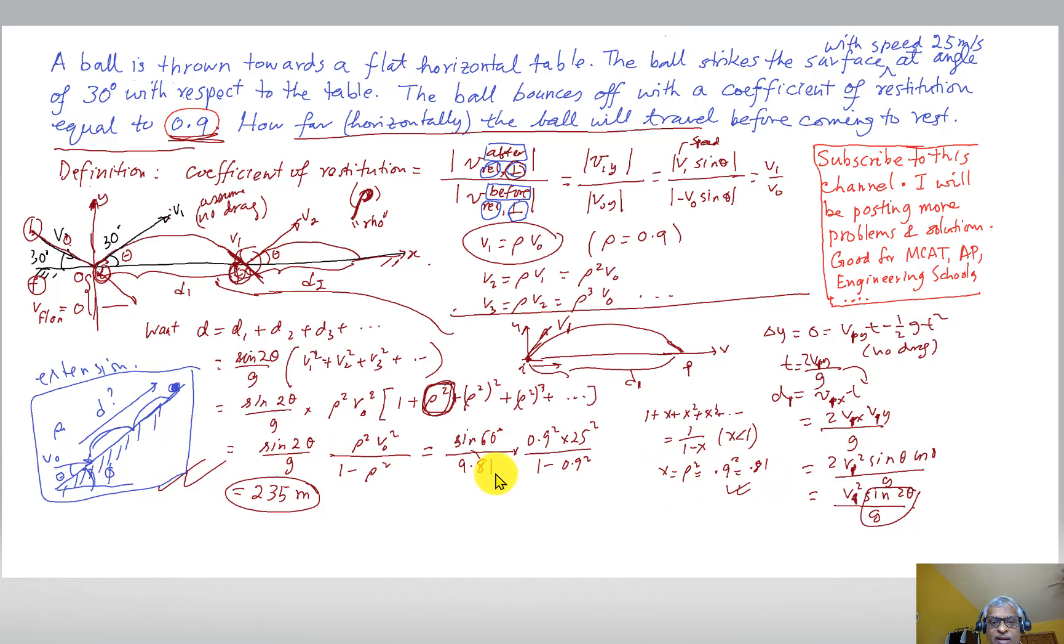Now we put the numbers and work it out. This is a whopping 235 meters. I think I took 25 meters per second which is pretty good speed. The reason I have such a large number is also because 0.9 here - if I had less restitution it would go to less distance.